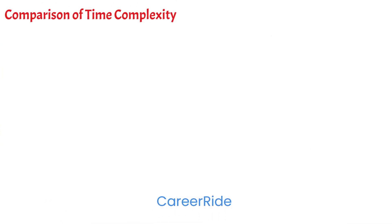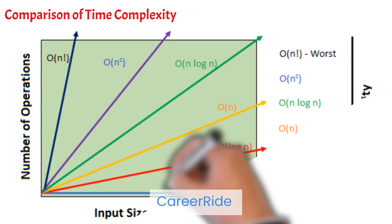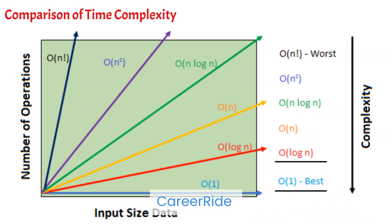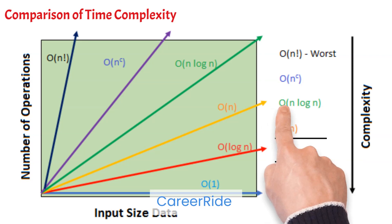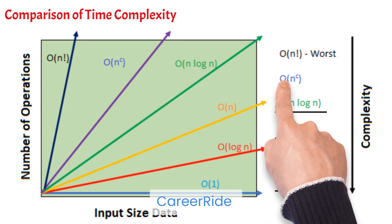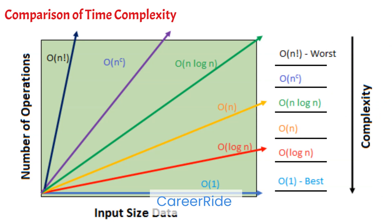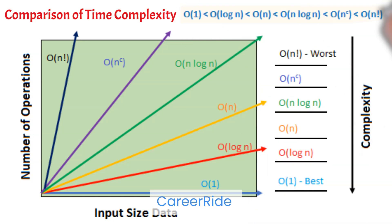Coming to the comparison of time complexity: O(1) is the best time complexity of an algorithm. Then comes O(log n), followed by O(n), then O(n log n), followed by exponential time complexity. And the last one is O(n!), which is the worst time complexity.